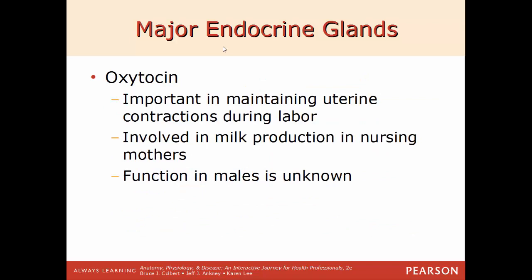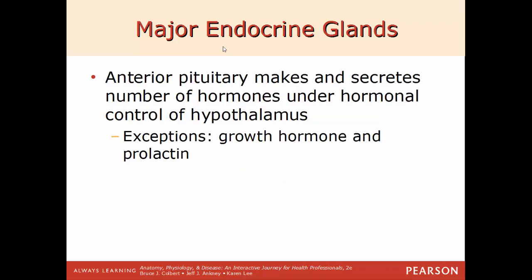Oxytocin is important in maintaining uterine contractions during labor, involved with milk production in nursing mothers, and its function in males is not currently known. When pregnancy is induced in a hospital, a woman is most likely given a drug called Pitocin, which is a synthetic form of oxytocin. By causing the uterine muscles to contract, it moves the fetus down the birth canal and starts the birthing process.